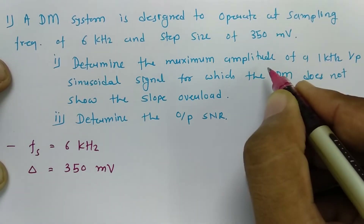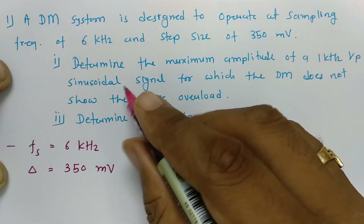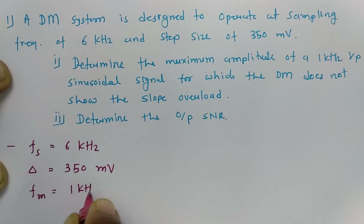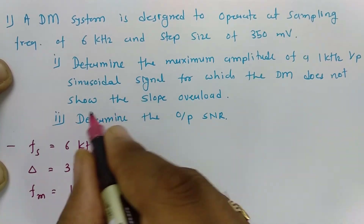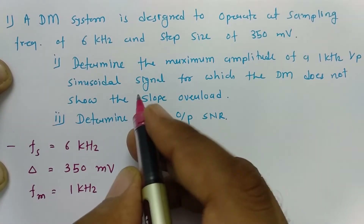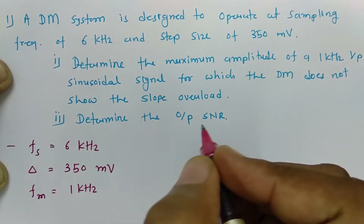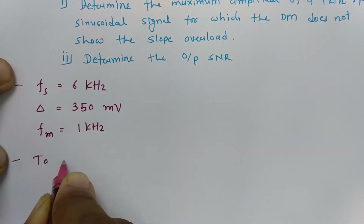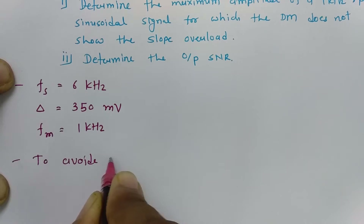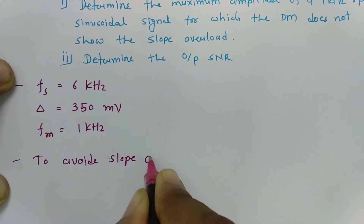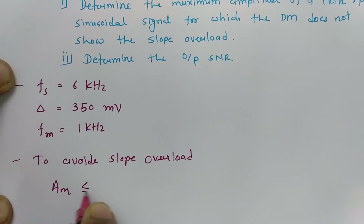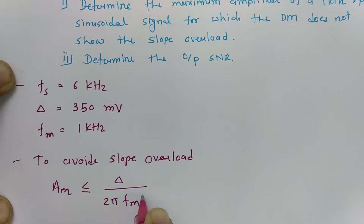The maximum amplitude of a 1 kilohertz input sinusoidal signal is to be found, meaning the modulating signal frequency fm is 1 kilohertz. We need to identify what the maximum amplitude should be so that slope overload distortion will not happen. To avoid slope overload distortion, the condition we have already derived is: Am should be less than or equal to delta divided by 2 pi fm Ts.